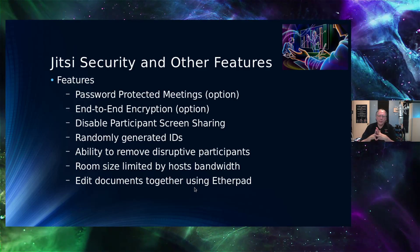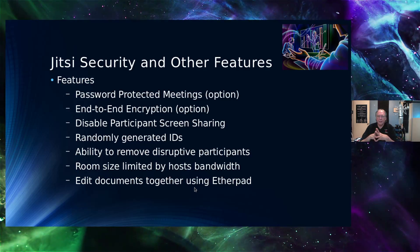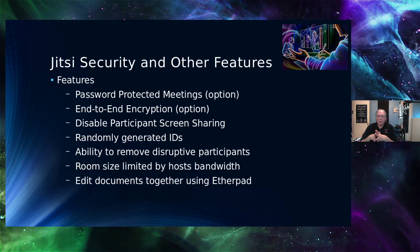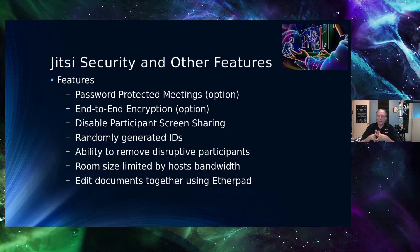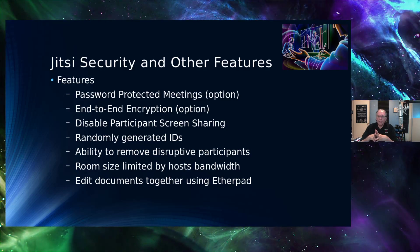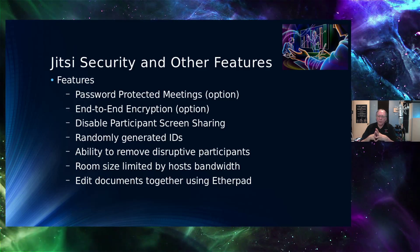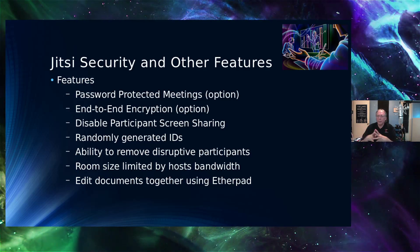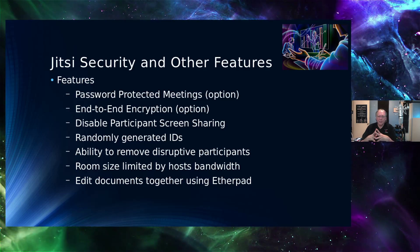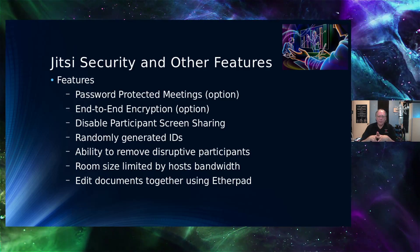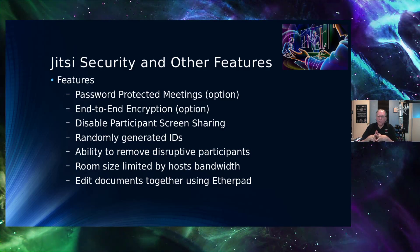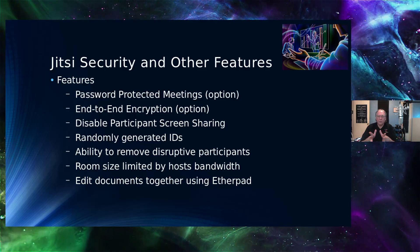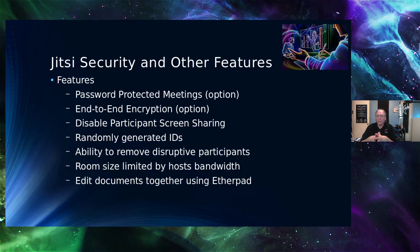Some security features: Jitsi supports password-protected meetings as an option. You can turn on end-to-end encryption, but it is not on by default — you have to go to the security window and select it for your meeting. You can disable participants' screen sharing, and there are randomly generated meeting IDs. Instead of a six-digit key, the IDs are fairly long passphrases — some are humorous — or you can choose your own passphrase. It also has the ability to remove disruptive participants.